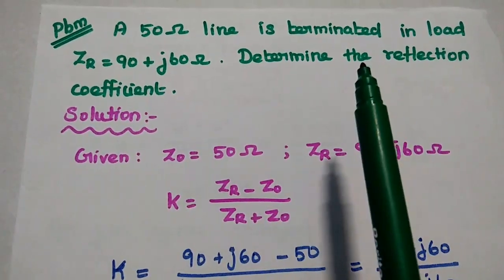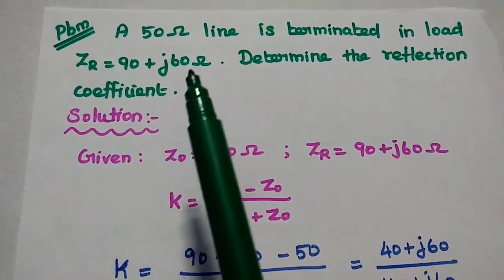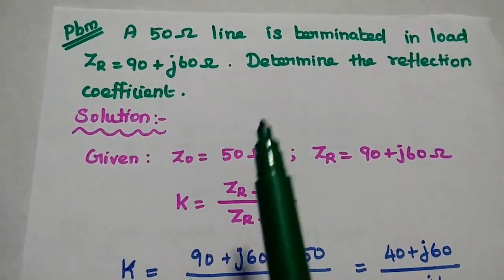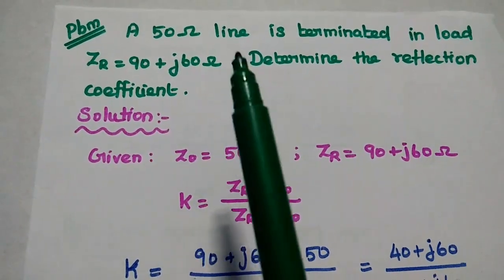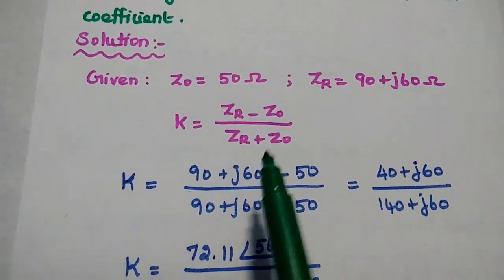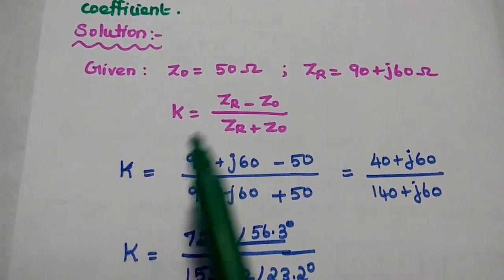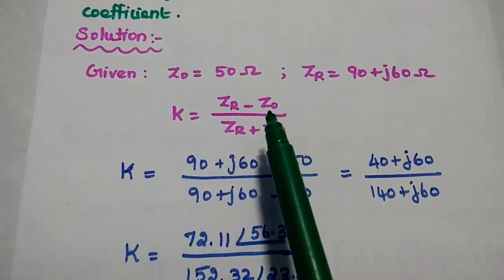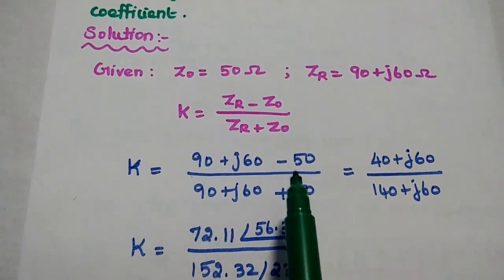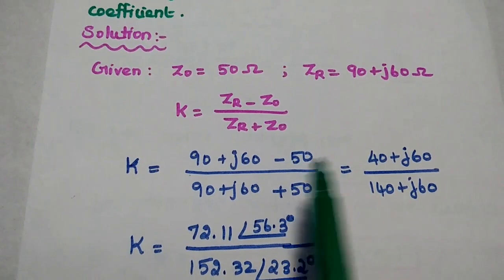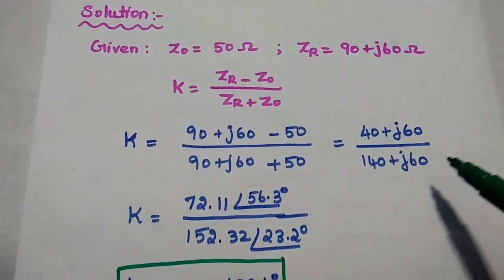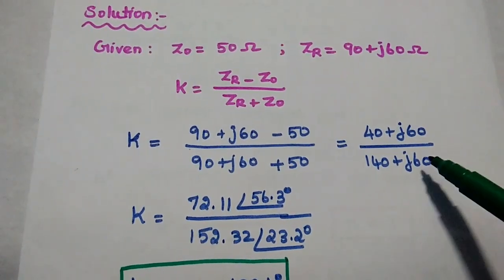Next problem: a 50-ohm line is terminated in load ZR equal to 90 plus j60 ohms. Determine the reflection coefficient. The ZR value is 90 plus j60 ohms, and the characteristic impedance Z0 is 50 ohms. Substituting into the formula: K equals (90 + j60 minus 50) divided by (90 + j60 plus 50), which simplifies to (40 + j60) divided by (140 + j60). To divide complex numbers, we must convert to polar form.